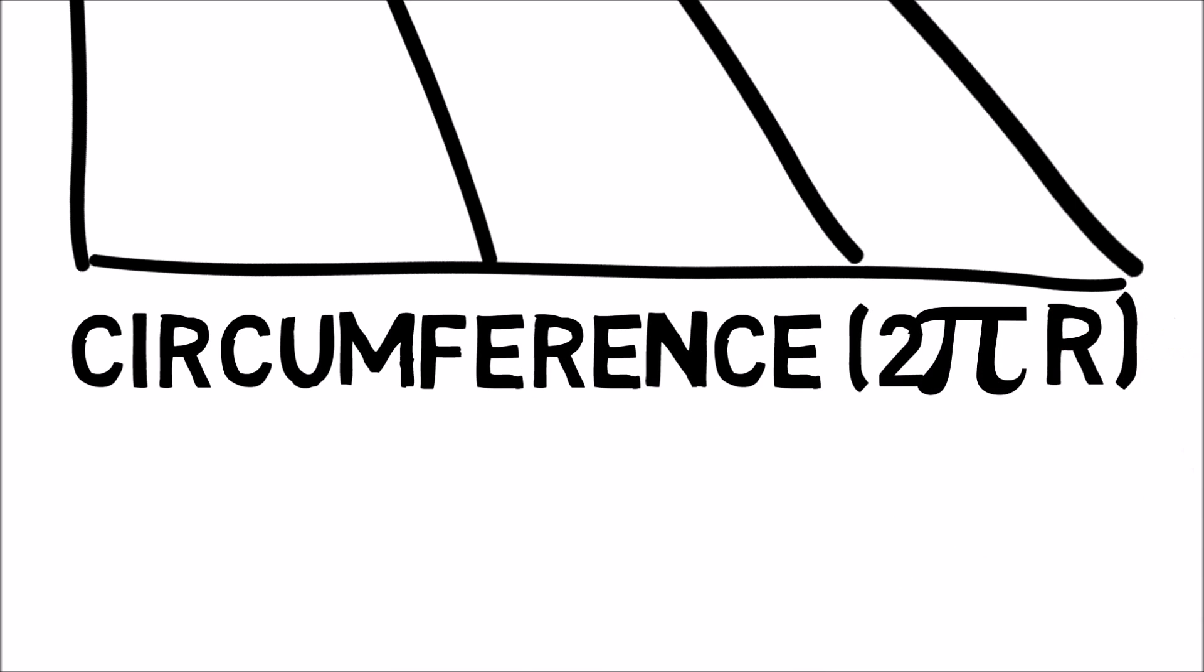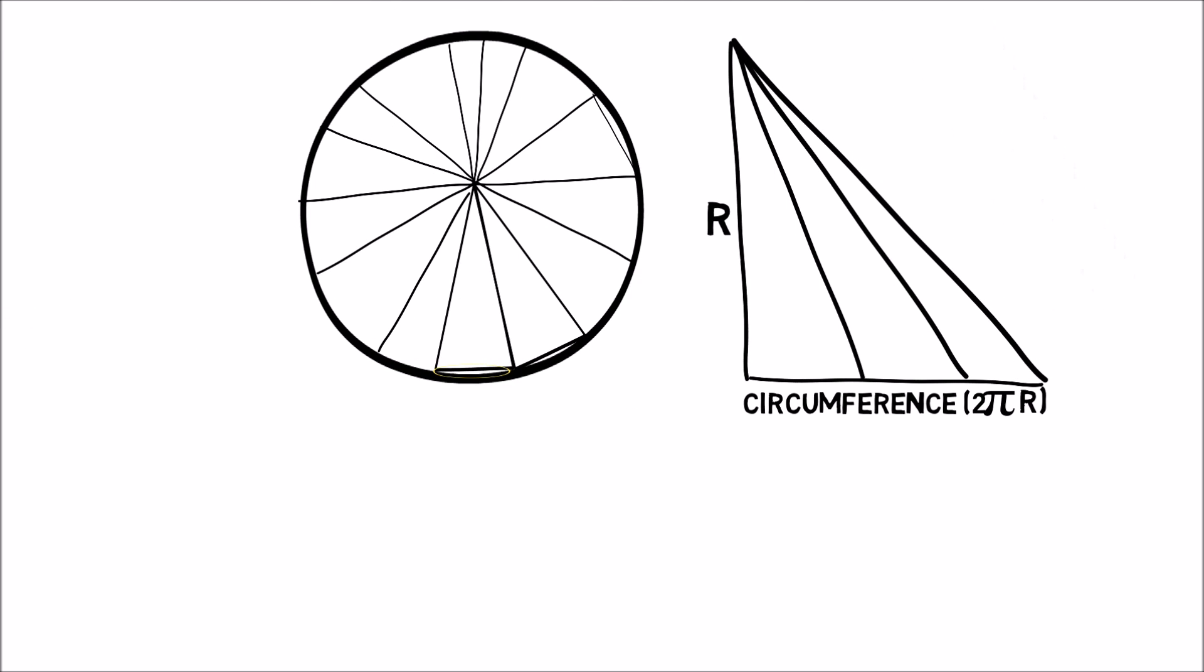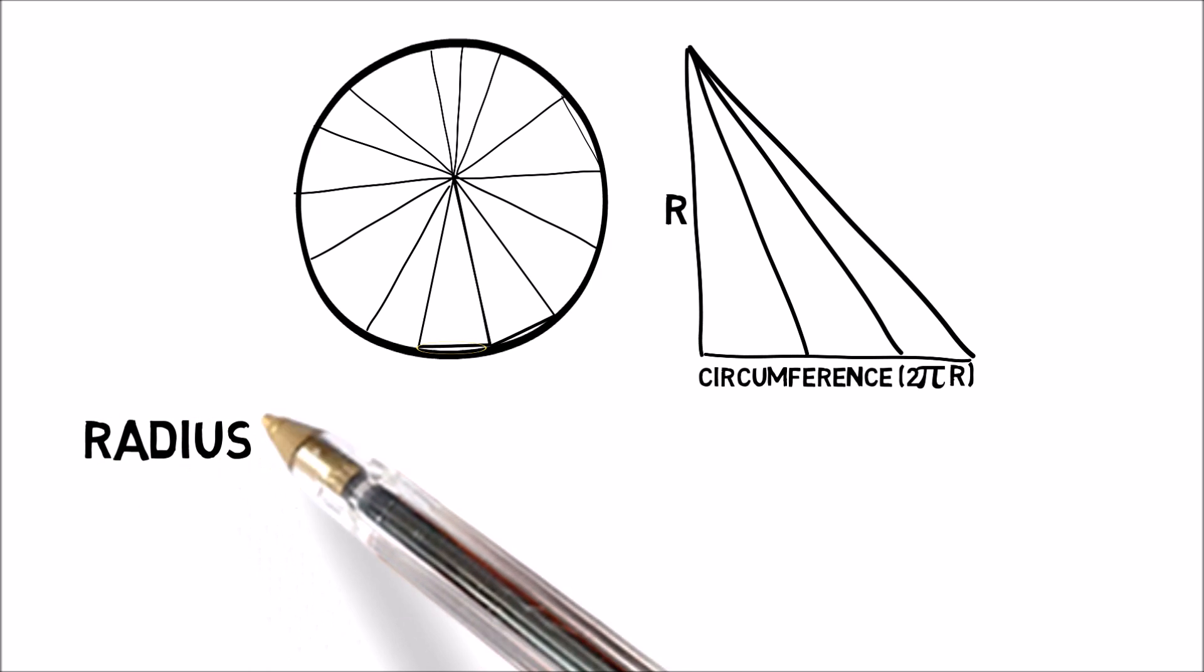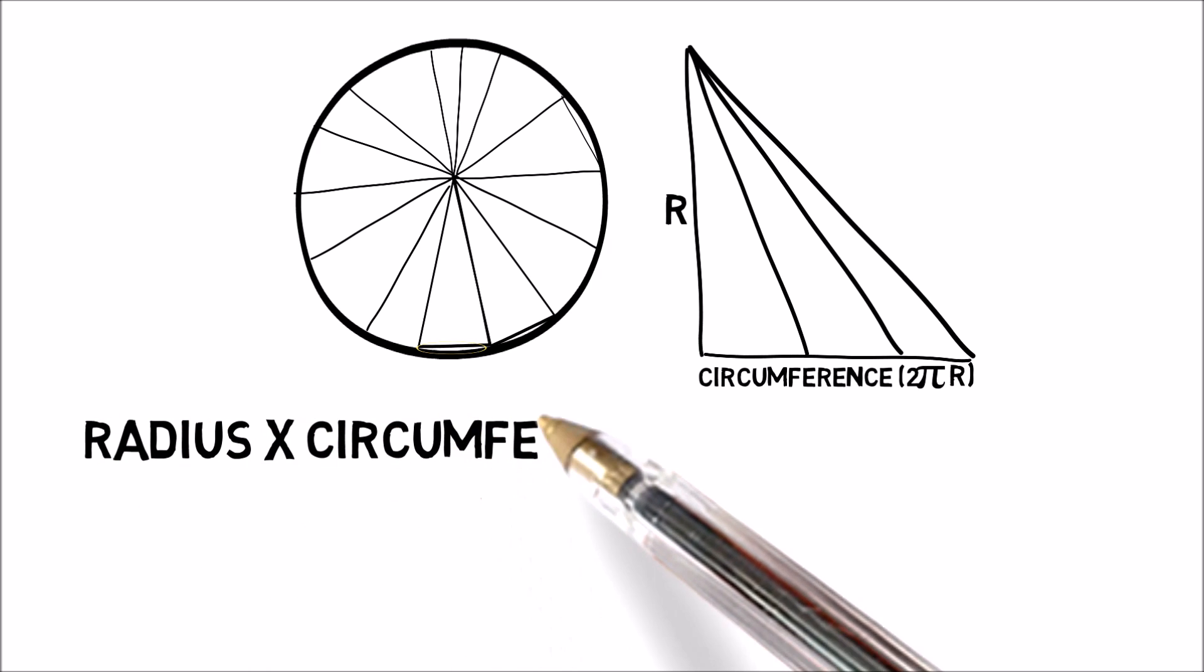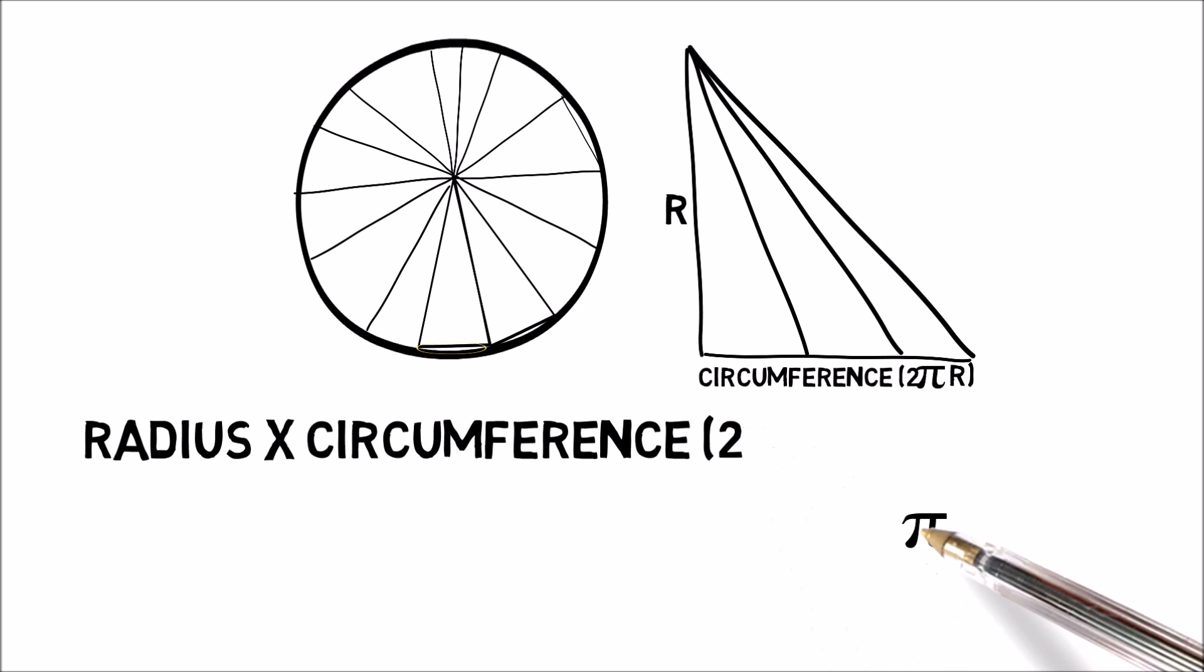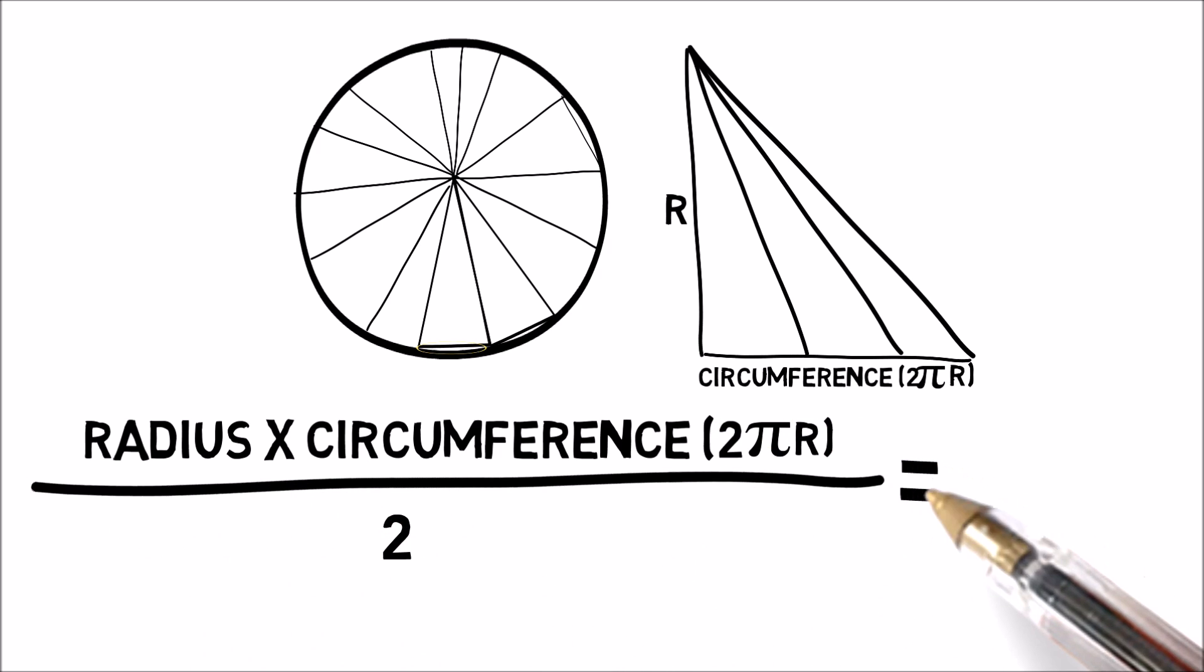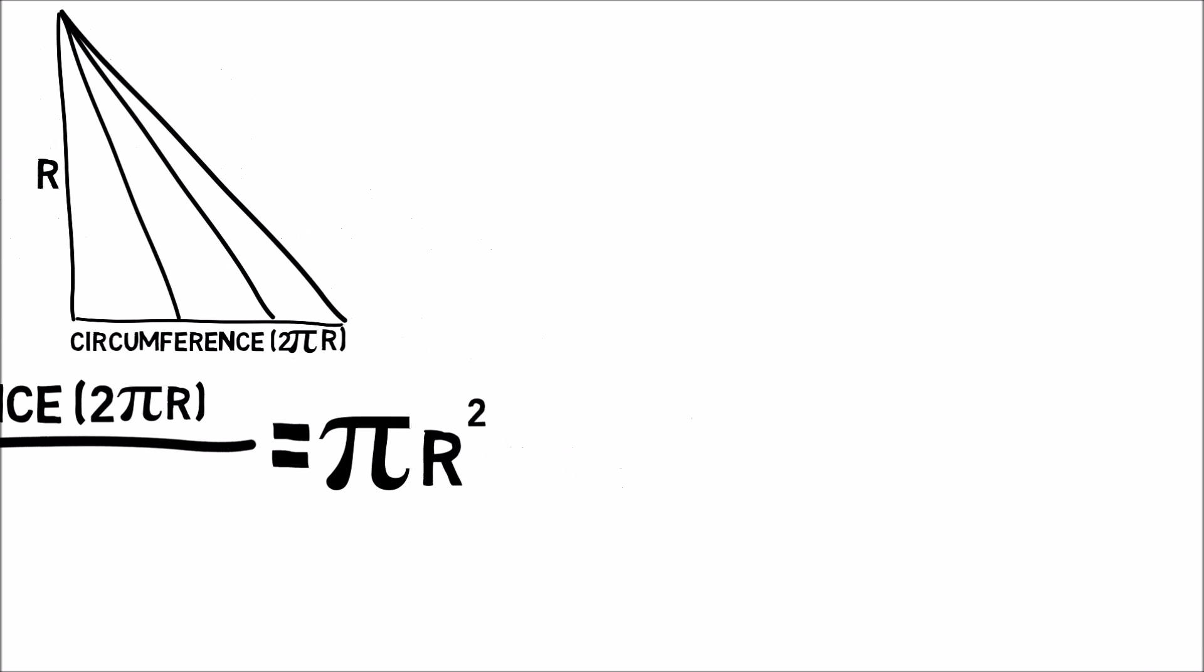Now let's find the area of our triangle. Base times height divided by 2. First, take the height, the radius of the circle, and multiply it by the base, the circumference of the circle, 2 pi r. Divide that all by 2. And we get pi r squared. This is the area of the triangle. But it is also the area of the circle. The area of all the triangles in the circle equals the area of the circle.